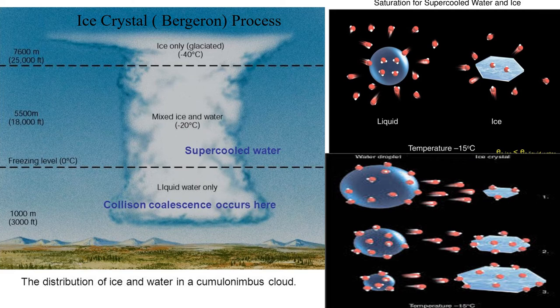Not until we reach an elevation of 7,600 meters, where the temperature drops below minus 40 degrees centigrade, do we have only ice crystals. At that level of atmosphere, the region of the upper cloud where only ice particles exist — at 7,600 meters above, with temperature below minus 40 degrees centigrade — we call it glaciated.